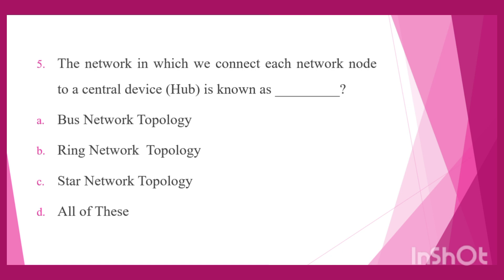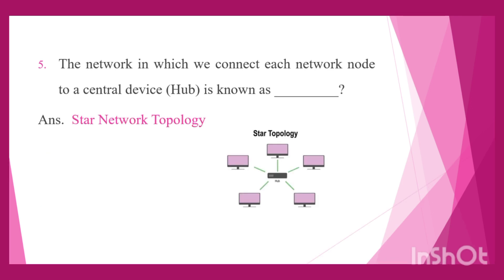Question 5: The network in which we connect each network node to a central device is known as — Option A: Bus topology, Option B: Ring topology, Option C: Star topology, Option D: All of these. In a star network topology we connect each network node to a central device. The answer is star network topology. This diagram shows the architecture of star topology, where each network node connects to a central device or hub.